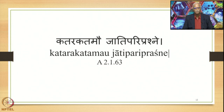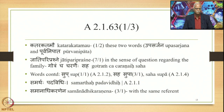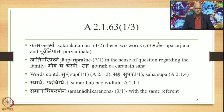Next is Sutra 2.163: Katara Katamau Jatipari Prasne — another Sutra stating the Karmadharaya Samasa. There are two Padas: Katara Katamau (1/2, meaning these two words in Prathama Vibhakti) and Jatipari Prasne. The Sutra Prathama Nirdishtam Samasa Upasarjanam assigns the term Upasarjana to these two words, and Upasarjanam Purvam ensures they occupy the initial position of the Tatpurusha compound.